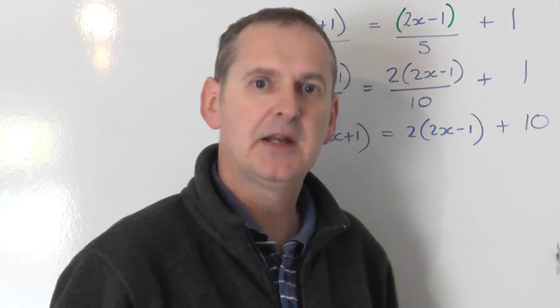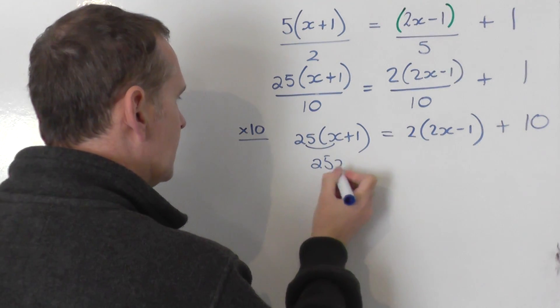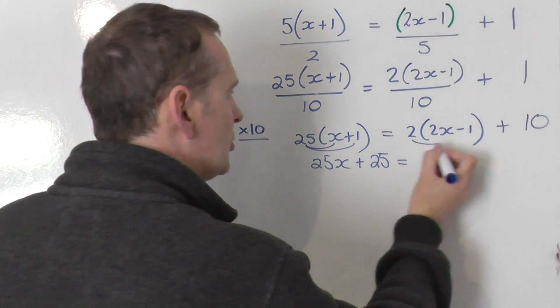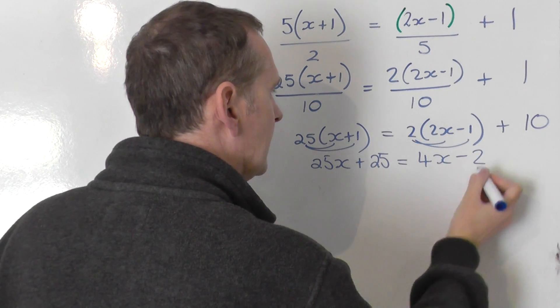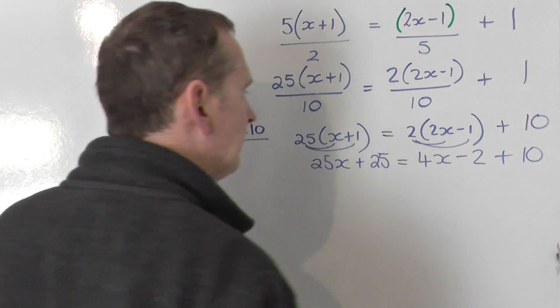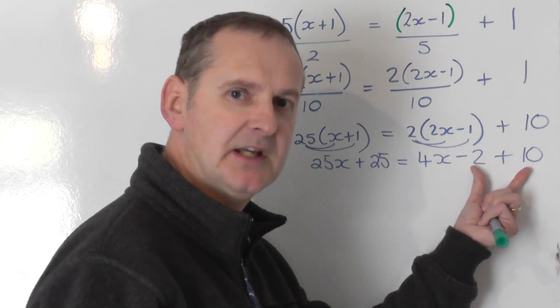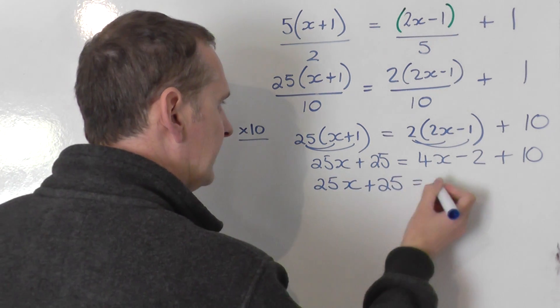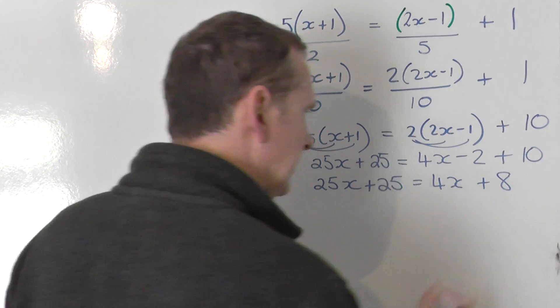We've now got rid of the fractions. Get rid of the brackets by expanding out. So 25 times x is 25x. 25 times plus 1 is plus 25. Equals 2 times 2x is 4x. 2 times minus 1 is minus 2. Plus 10. So we get to that. Let's tidy up a little bit on the right-hand side first. So I've got 25x plus 25 on the left. 4x and then minus 2 plus 10 is plus 8 on the right.